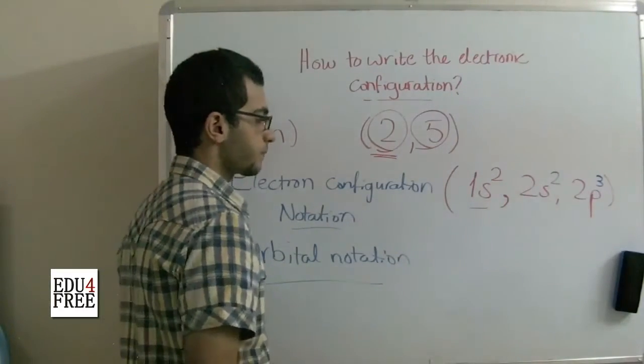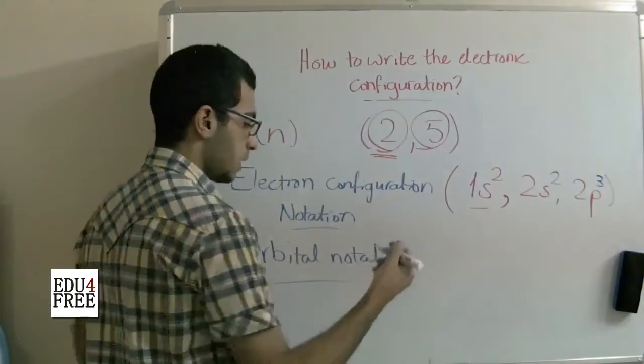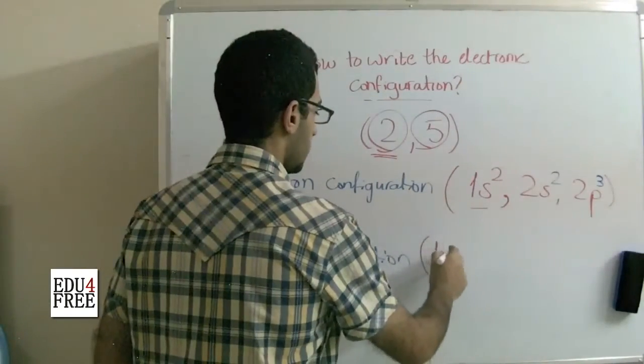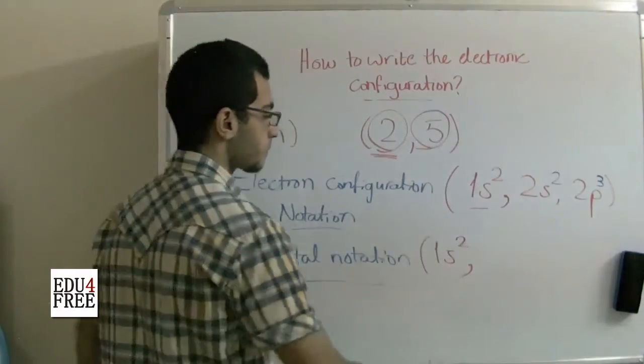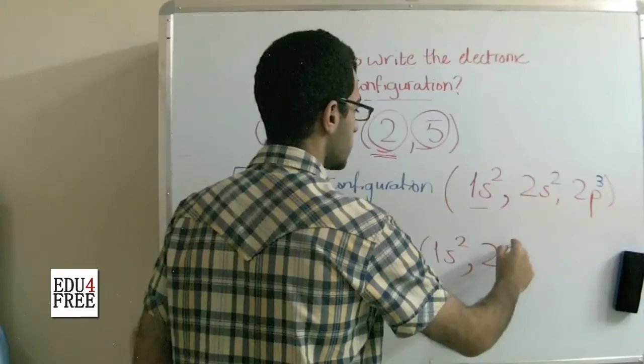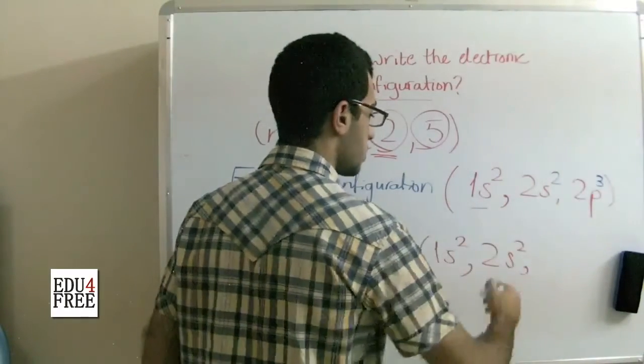This has more details than the previous methods. We have the 1s which has 2 electrons, then the 2s which has 2 electrons, and the p has 3 orbitals, so we write them.